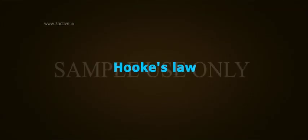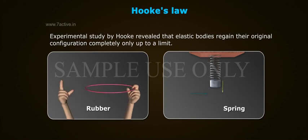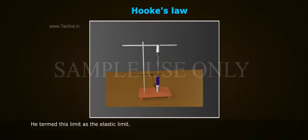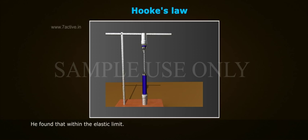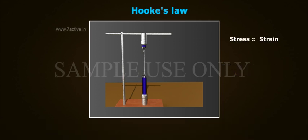Hooke's Law. Experimental study by Hooke revealed that elastic bodies regain their original configuration completely, only up to a limit. He termed this limit as the elastic limit. He found that, within the elastic limit, the extension produced in the wire was directly proportional to the load applied. That is, stress is directly proportional to strain.